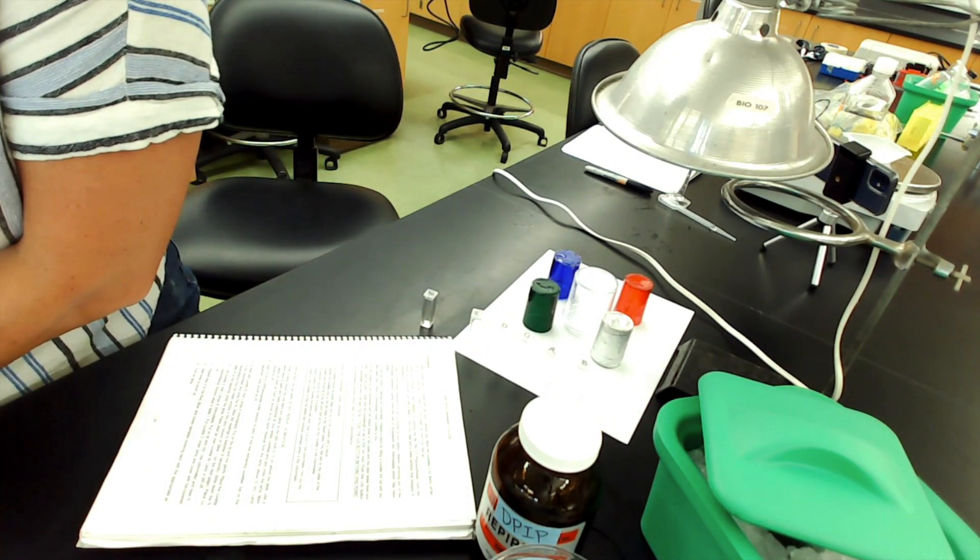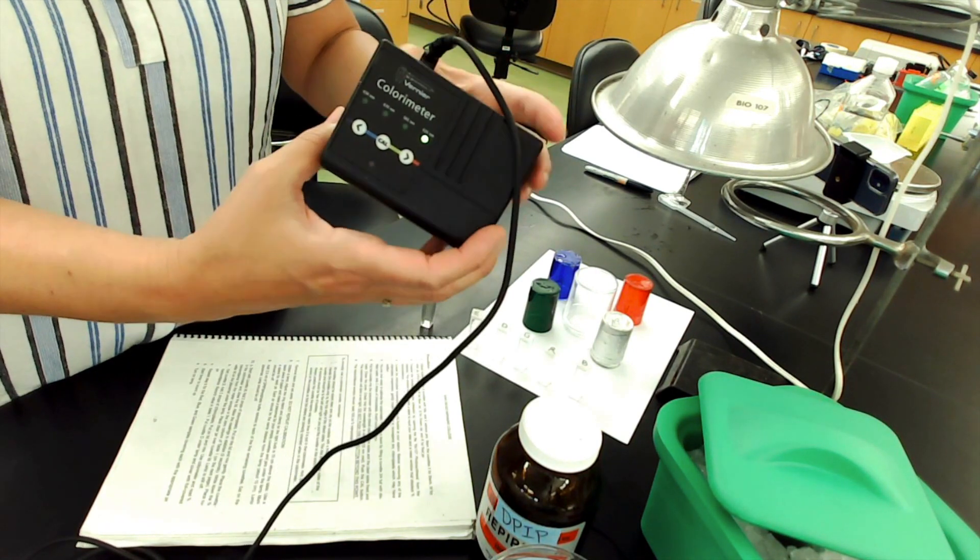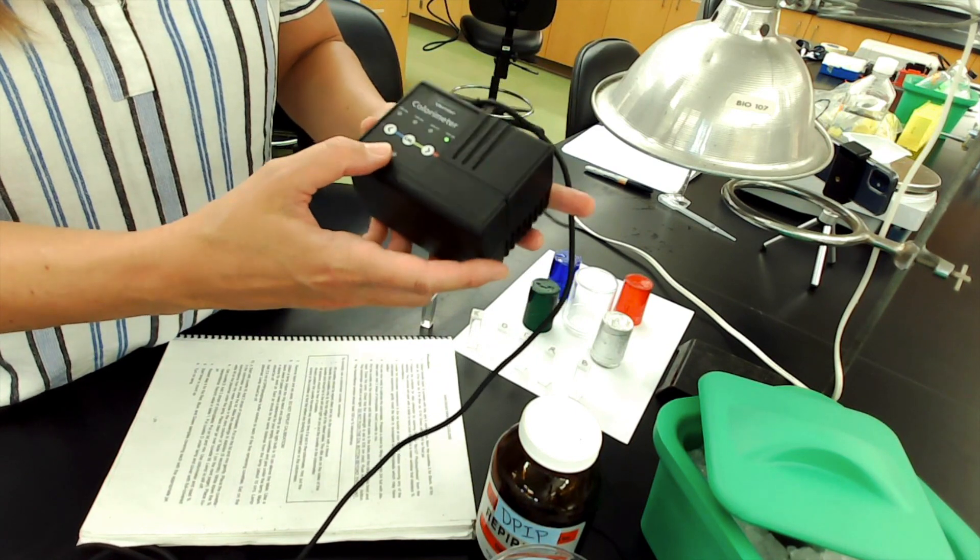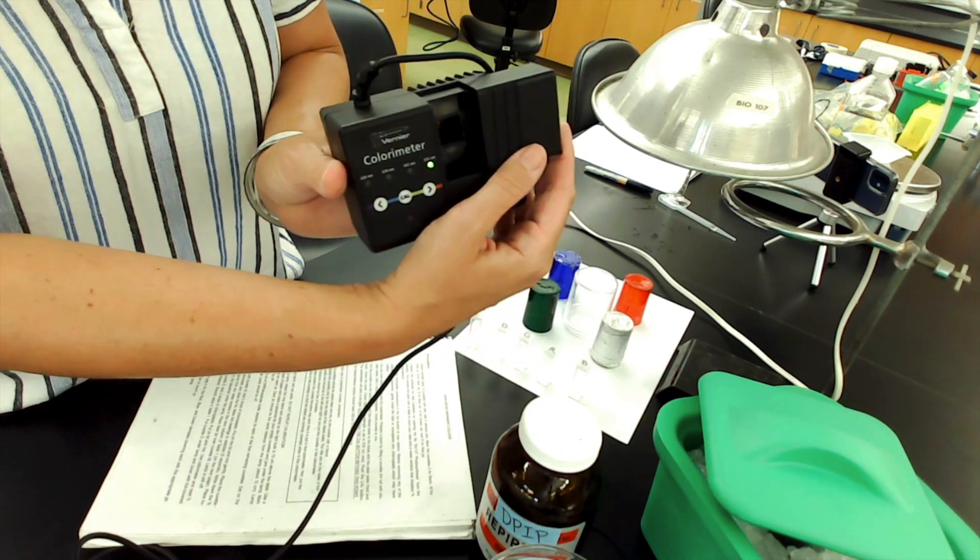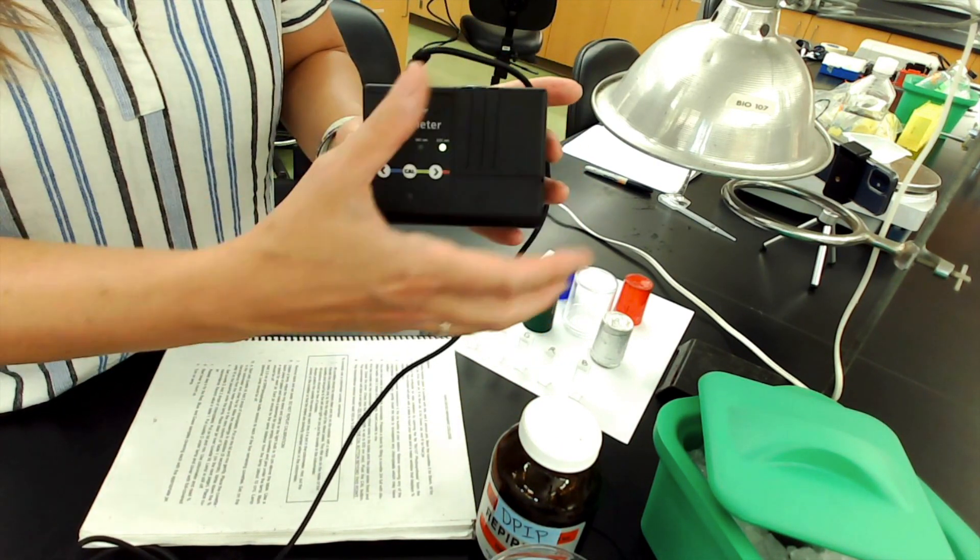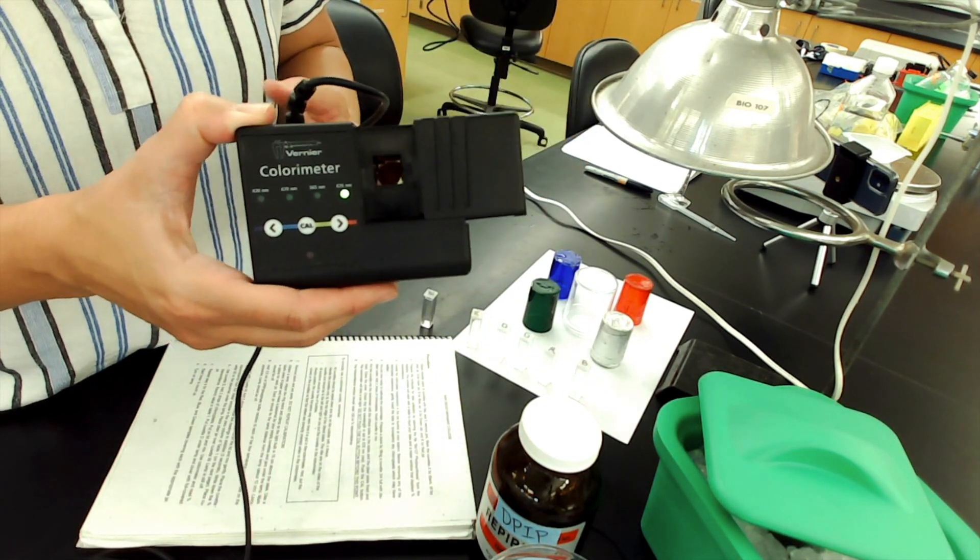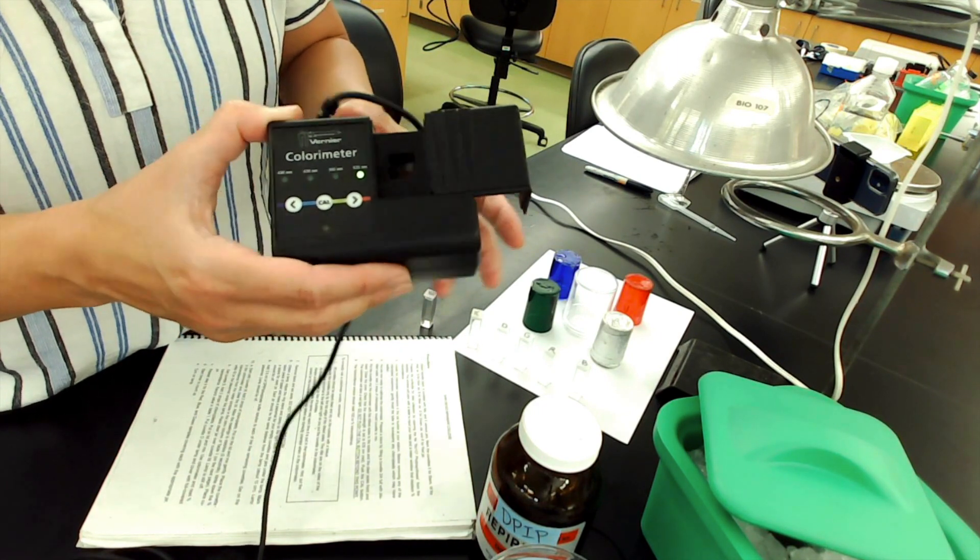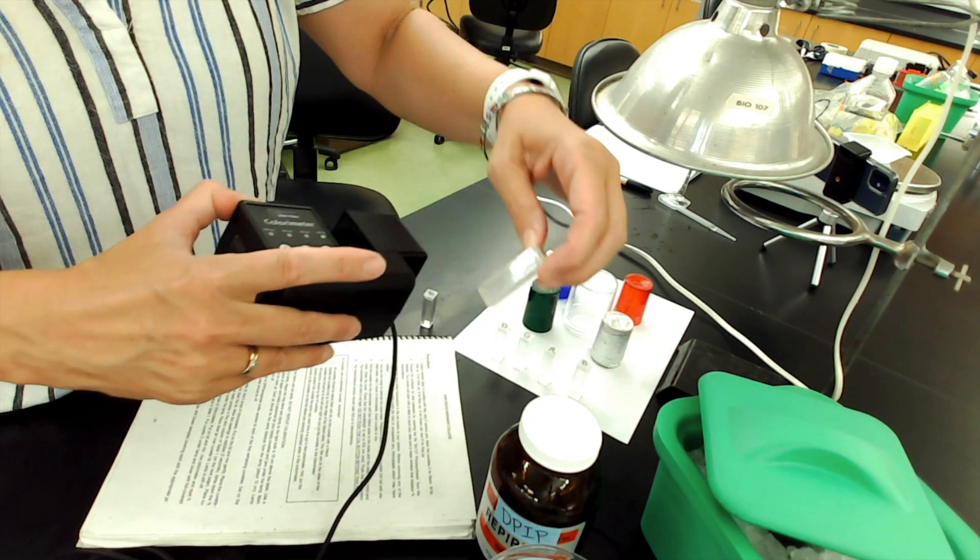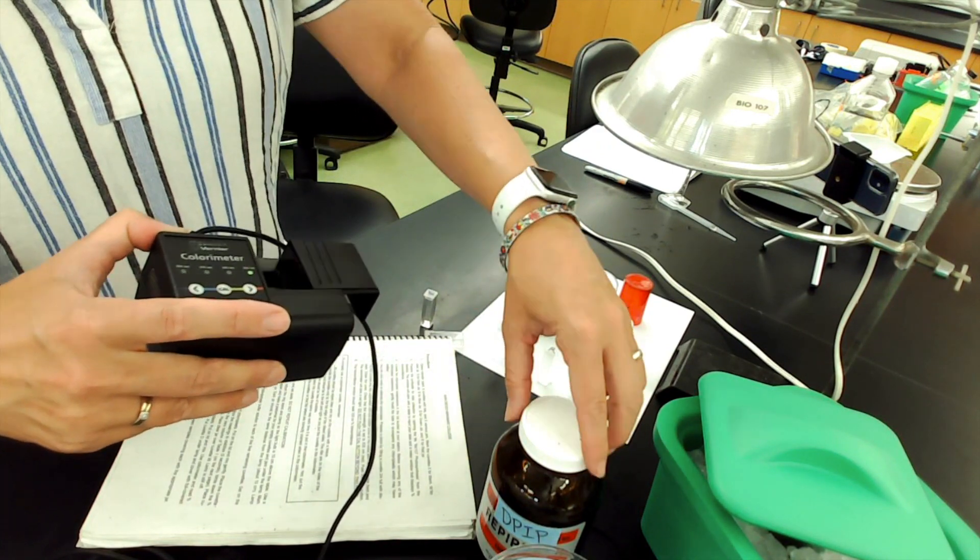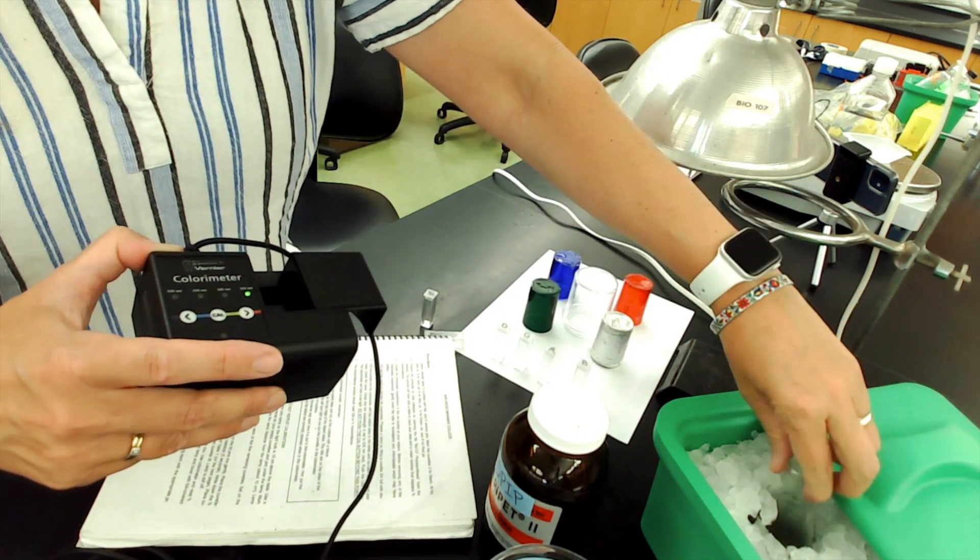The data is going to be collected through this thing. This is called a colorimeter. It's really a little device called a spectrophotometer. It has a little door that opens and closes. When I open it, see there's a little hole in it in the back? These cuvettes actually fit into that little hole and the cuvettes will be filled with a mixture of the D-PIP liquid and some chloroplasts that are in here.